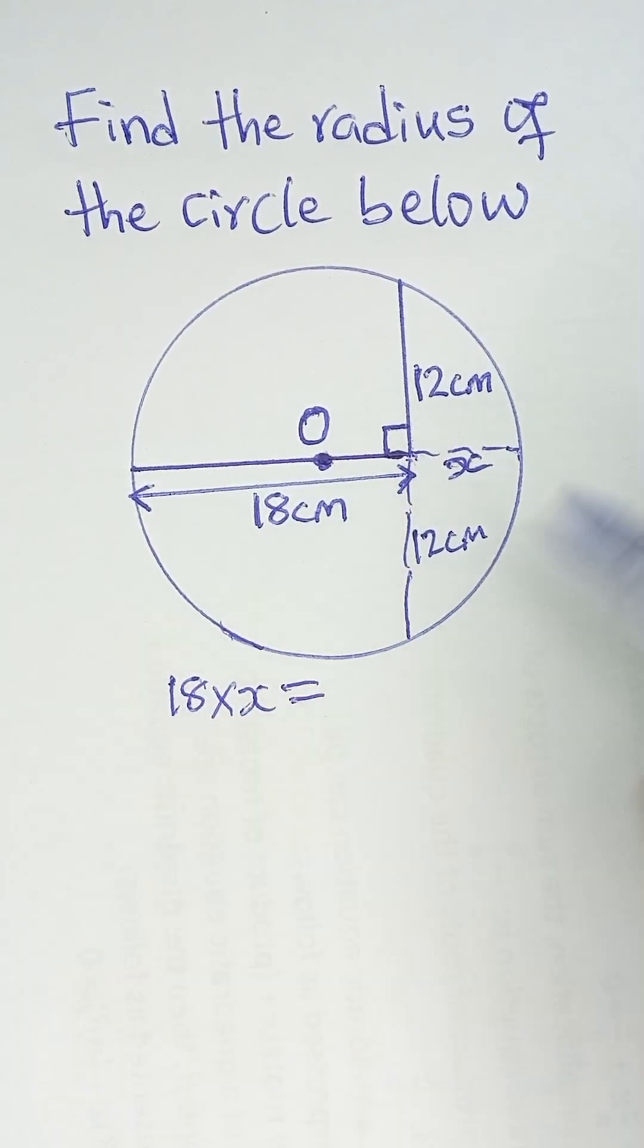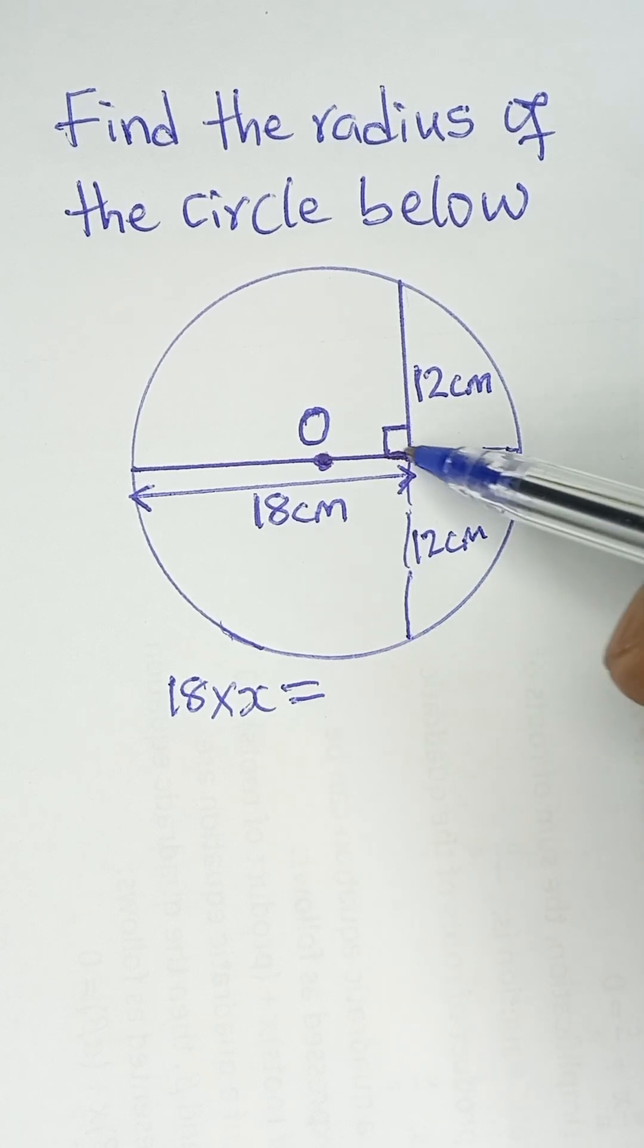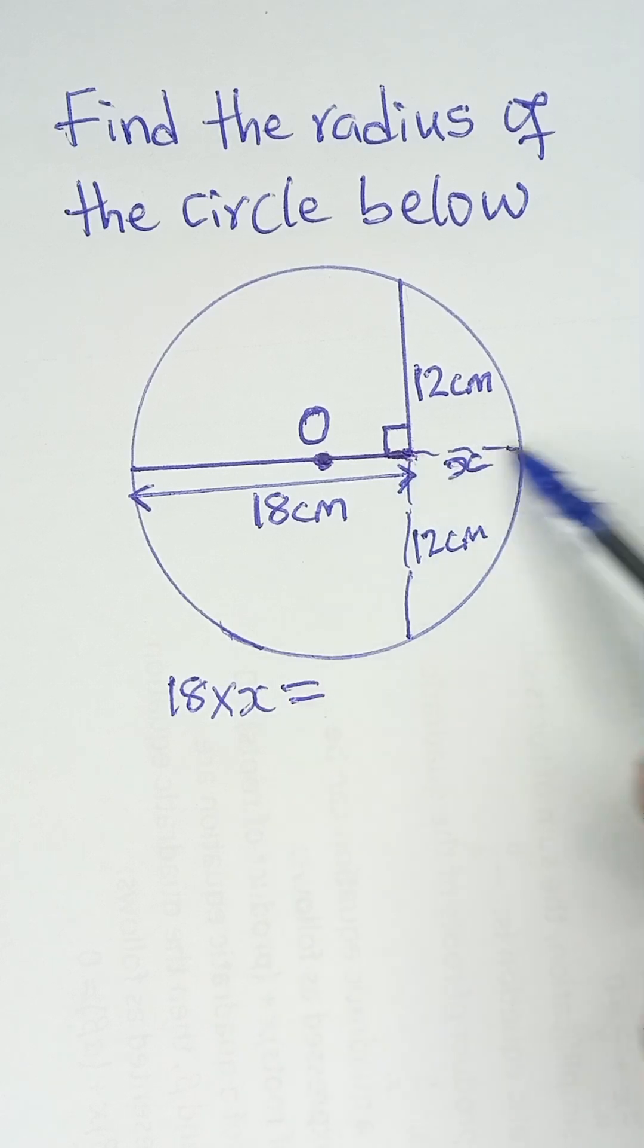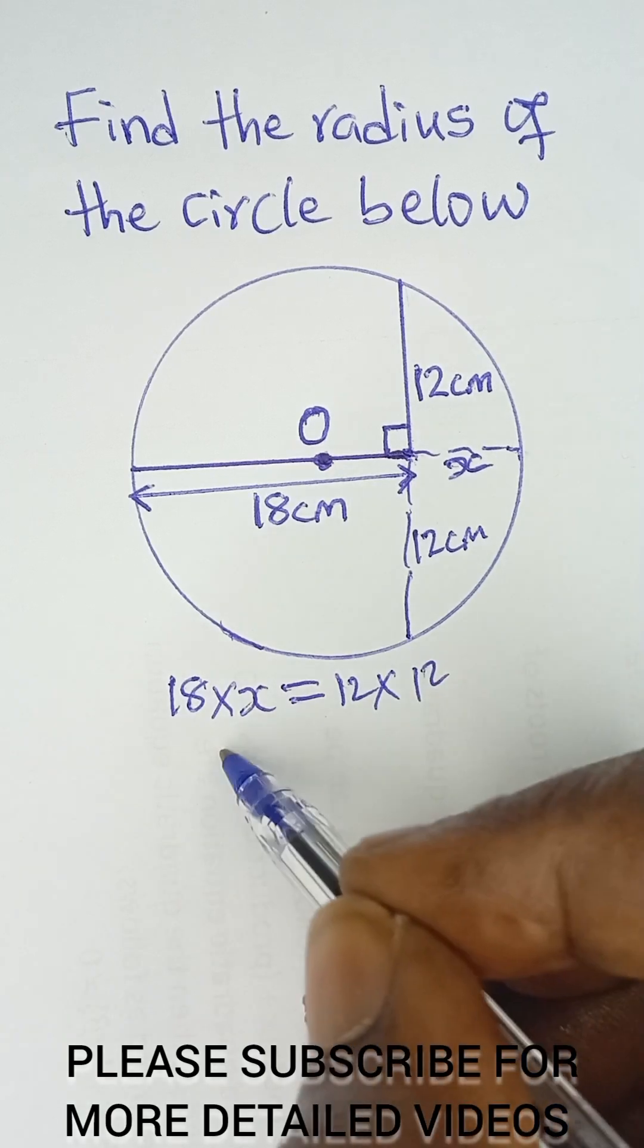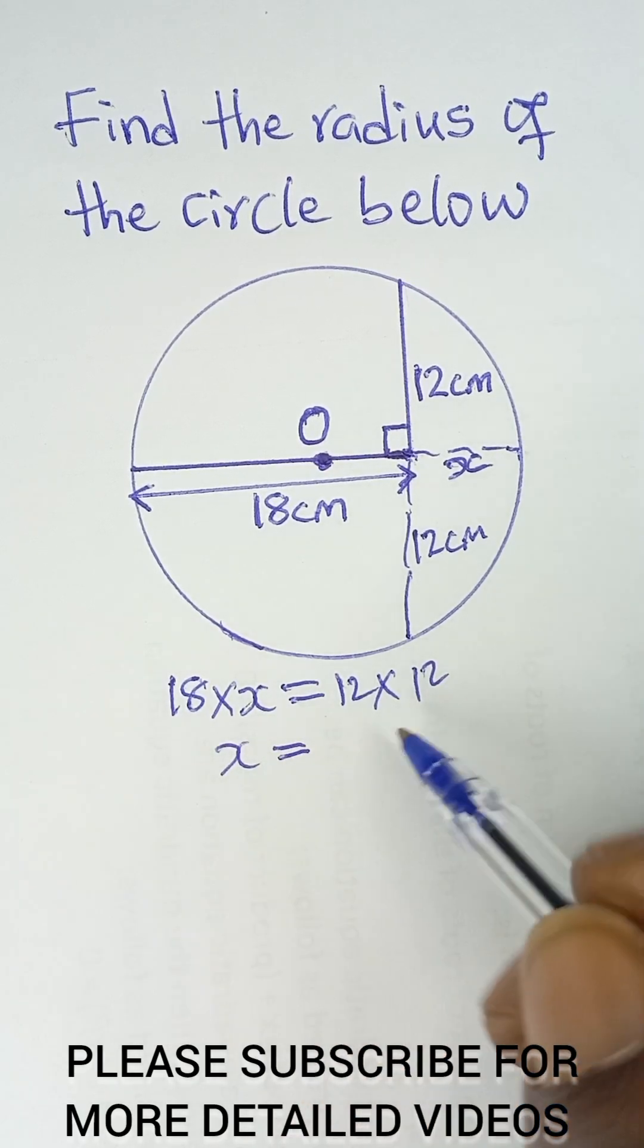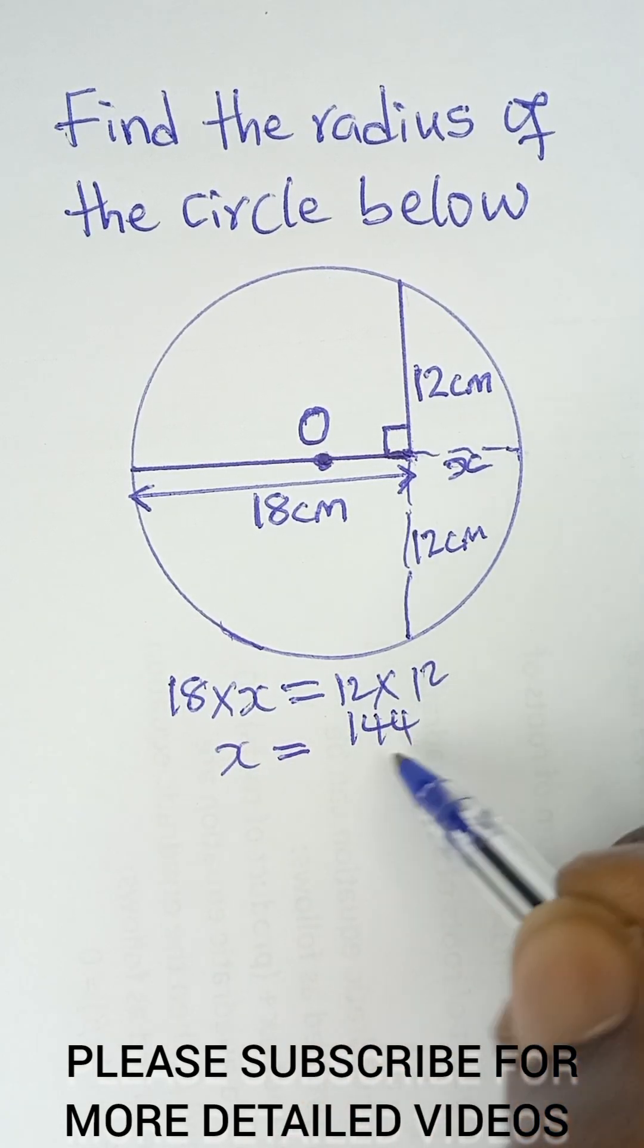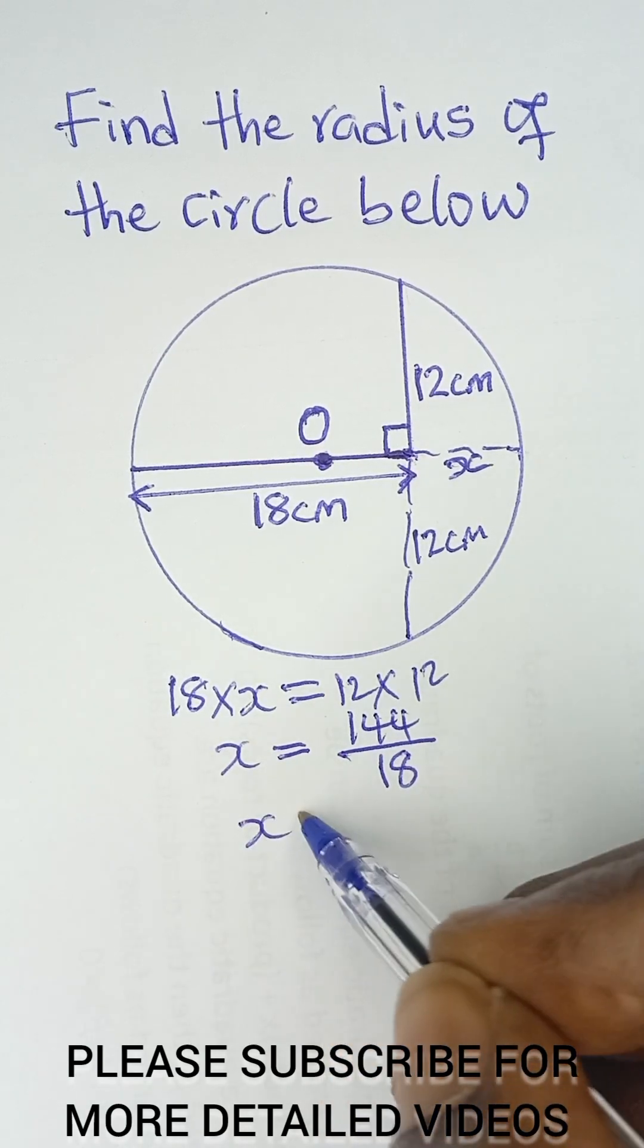That is 18 multiplied by x will be equal to 12 multiplied by 12. Don't forget this is the point of intersection of the chords, so that's the reference point. So 18 multiplied by x equals 12 multiplied by 12, which is 144. So x will be equal to 144 divided by 18, and that gives us x equals 8 centimeters.